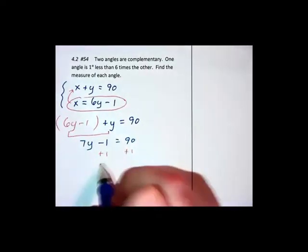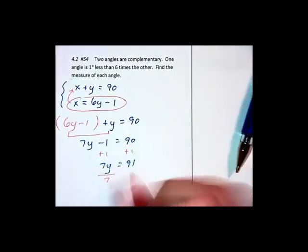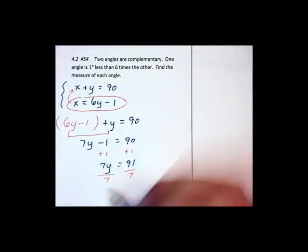7y equals 91. And dividing each side by 7 by 7 gives us y equals 13.